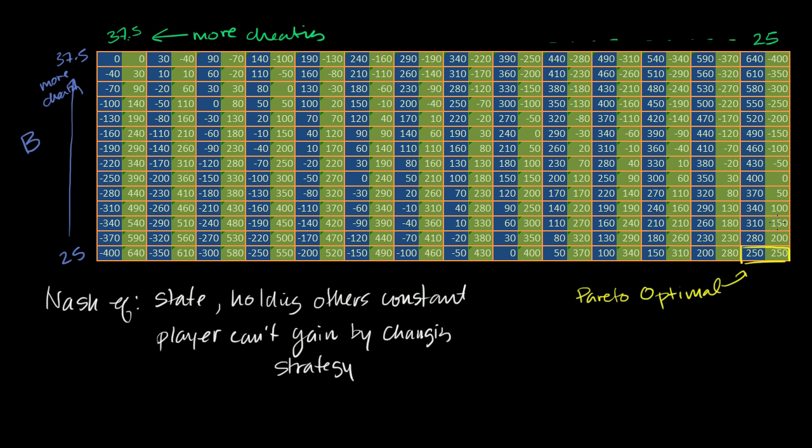Let's see if that is true of this state. If we hold A constant, we're in this column. Is there a change of strategy B can do that would allow B to gain? Well, sure. B can increase production, as we saw in the last video. We go from this bottom right state to one above it. Now B's economic profit is 280, A's is 200. The pie has shrunk, but B got a larger chunk. So that was not a Nash equilibrium. There is a player that can gain by changing their strategy.